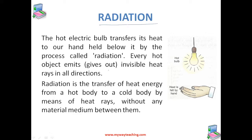Heat energy is transferred from a hot object to a cold object by means of heat rays. This method of transfer of heat energy by heat rays is called as radiation. Radiation is the transfer of heat energy from a hot body to a cold body by means of heat rays without any material medium between them. The best example is the transfer of heat energy from the sun to the earth. When we come out in the sunshine, we feel hot.